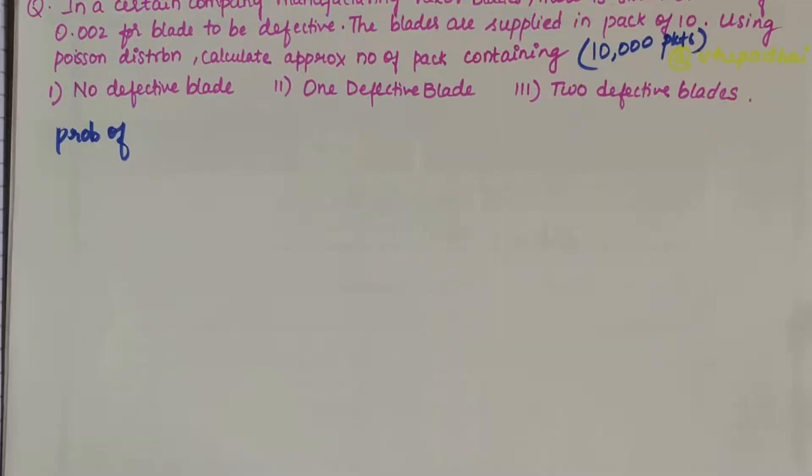The blades are supplied in a pack of 10. Using Poisson distribution, calculate the approximate number of packs containing no defective, one defective, and two defective blades in a consignment of 10,000 packets.